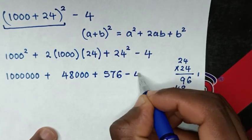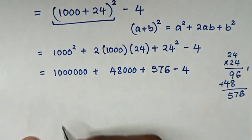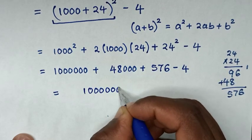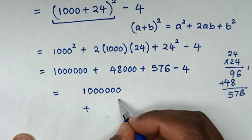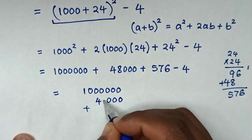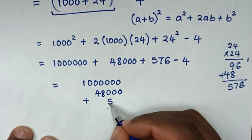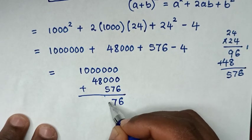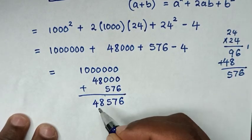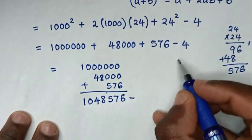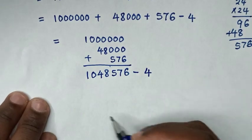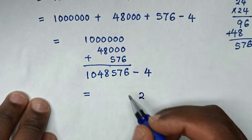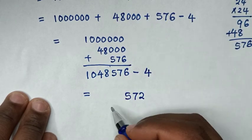Then minus 4. So in the next step, we add 1,000,000 plus 48,000 plus 576, which equals 1,048,576. Then minus 4, so 6 minus 4 is 2, then 7, 5, 8.